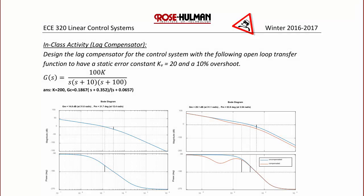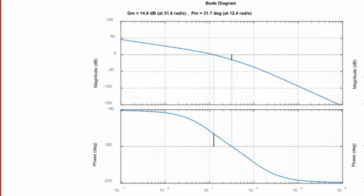Let's try an example — in-class activity. Design the lag compensator for the control system with the following open-loop transfer function to have a static error gain KV equal to 20 and 10% overshoot. The transfer function is G(s) equal to 100K over s times (s+10) times (s+100). Two Bode plots are provided: the first is the uncompensated Bode diagram, and the second is the compensated Bode diagram. For the first, we find K to satisfy the steady-state error requirement, then create the Bode plot and determine gain and phase margins.